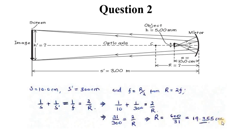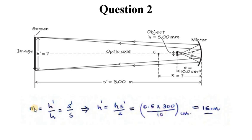What about H prime? We are going to use the concept of magnification. H prime, which is the image height over H, the object height, is actually equivalent to S prime, the image distance, over the object distance.